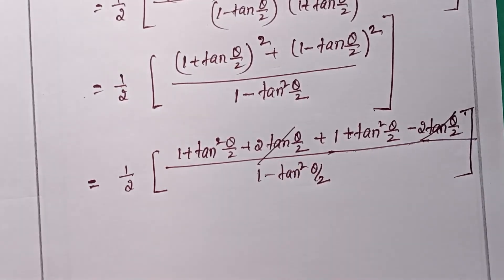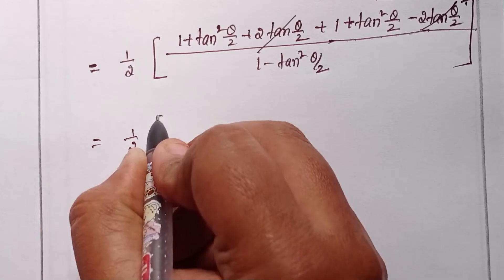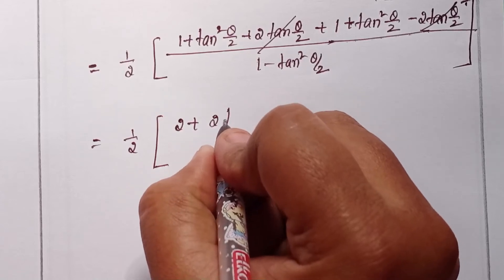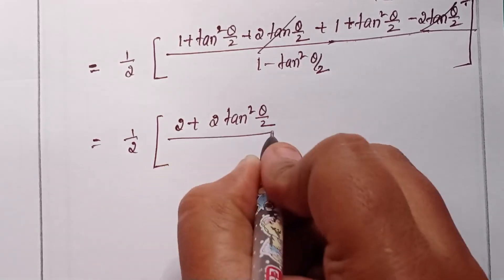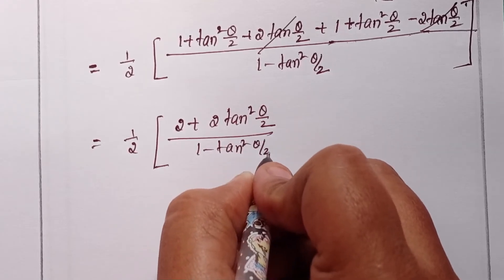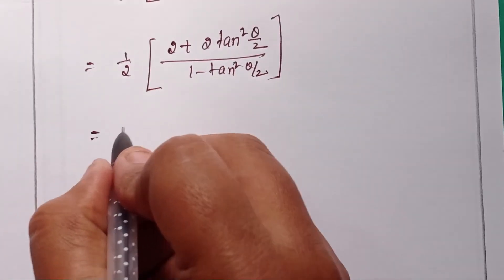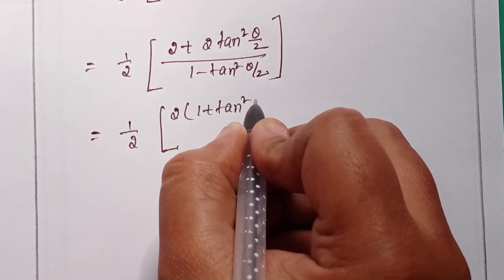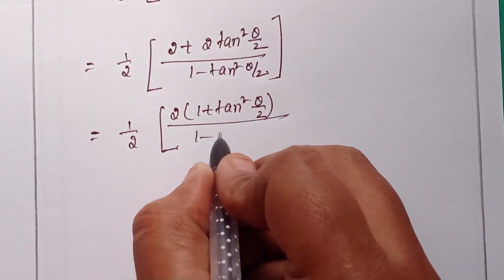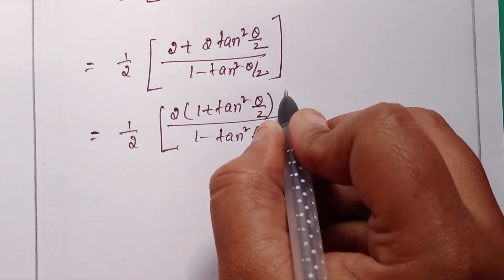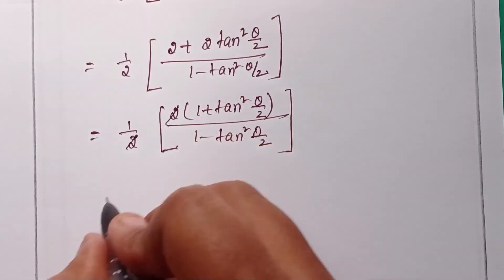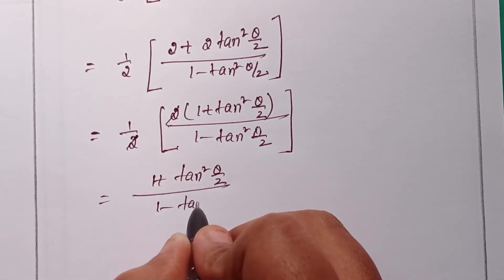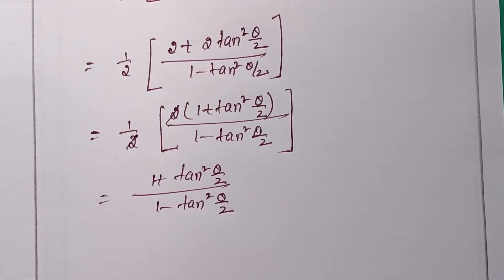The 2tan(θ/2) terms cancel each other. So the numerator becomes 1 + 1 = 2, plus tan²(θ/2) + tan²(θ/2) = 2tan²(θ/2). Combined with the (1/2) factor, we get (1/2) × (2 + 2tan²(θ/2)) / (1 − tan²(θ/2)). The 2 cancels, leaving (1 + tan²(θ/2)) / (1 − tan²(θ/2)).